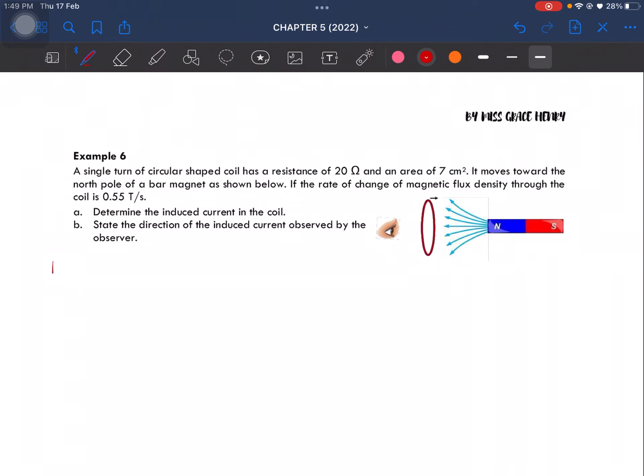Given is the number of turns which is single turn, so N equals 1. The resistance is 20 ohm. Area is 7 times 10 negative 4 meters square. And the rate of change of magnetic flux density is 0.55 tesla per second.